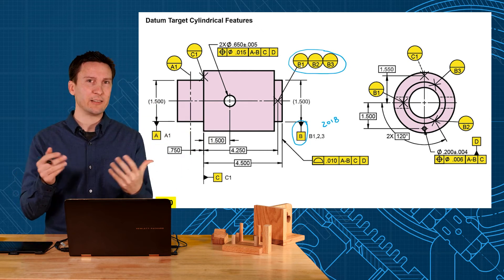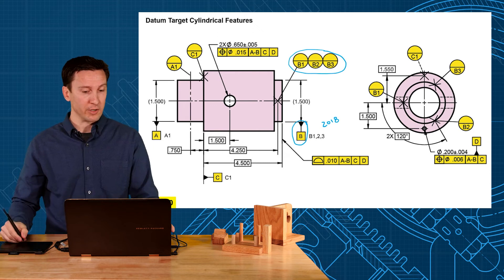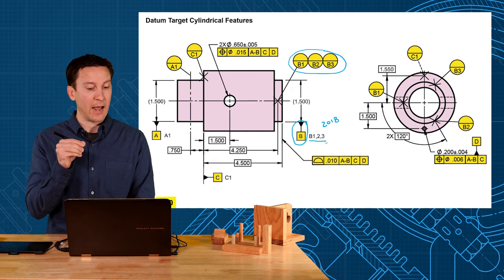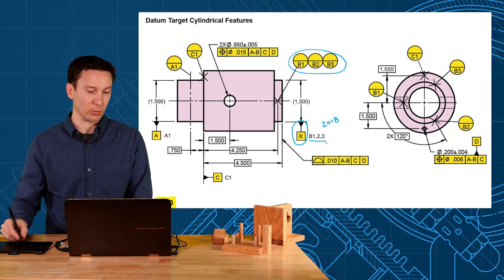But if you use a datum feature symbol along with your targets, you have to clarify that this is being established by targets. You do that by writing the target letter and then the numbers of the targets next to them.